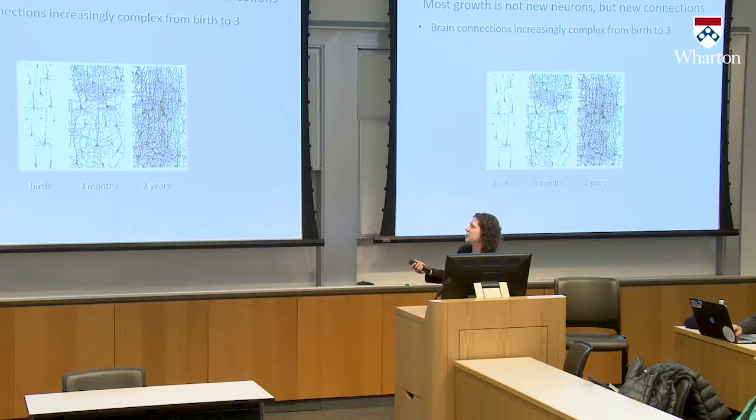It turns out it's not just the number of cells that's so extraordinary, but really the connections between cells. These brain connections become increasingly complex in the first several years of life. Here I'm showing you the brain connections or synapses at birth, at three months, and at two years. By age three, we have a thousand trillion connections or synapses between our cells.